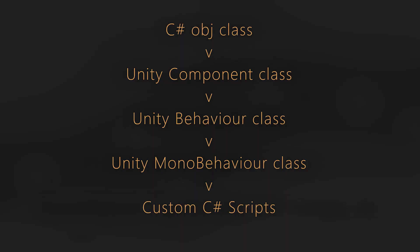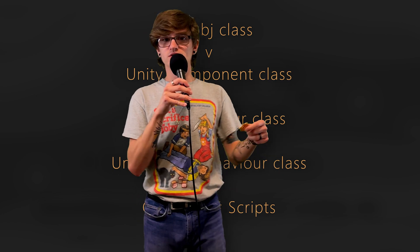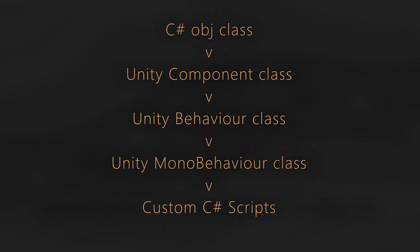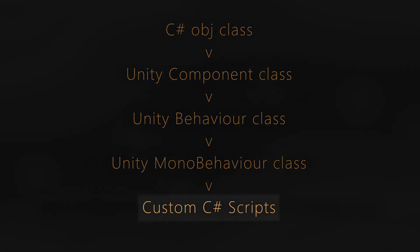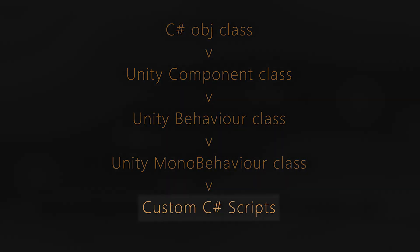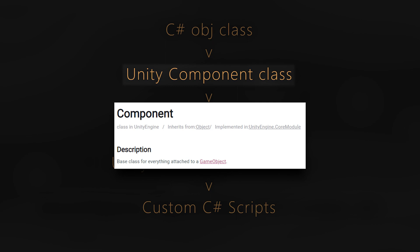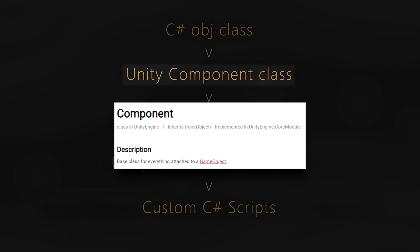If you take a look at this diagram, you can see that most things in Unity will always be derived from the Object class in one way or another, whether that's through another script or just being derived from the Object class itself. For example, all of the scripts you make in Unity are going to derive from MonoBehavior. MonoBehavior derives from Behavior, Behavior derives from Component, and Component finally derives from Object.